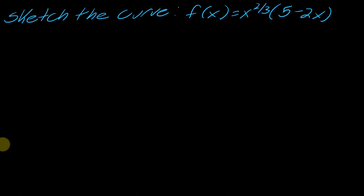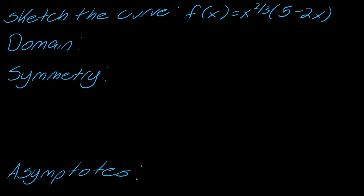We want to sketch the curve f(x) = x^(2/3) times (5 minus 2x). We've got a rational exponent times this other part of the expression. If you've watched any of my other videos on sketching curves, you always want to start with just getting these three parts out of the way — it'll set the expectations for the rest of the problem. If you want to see a breakdown of why we sketch the curve the way we do, I'll drop a link to a much longer example and lesson in the description.